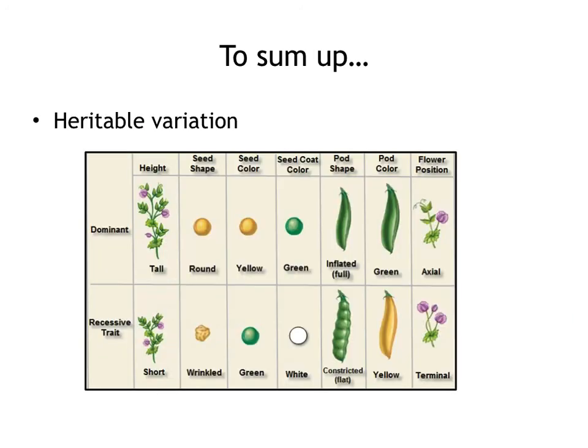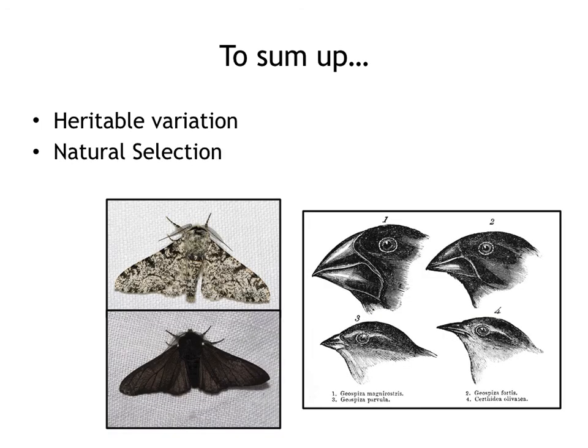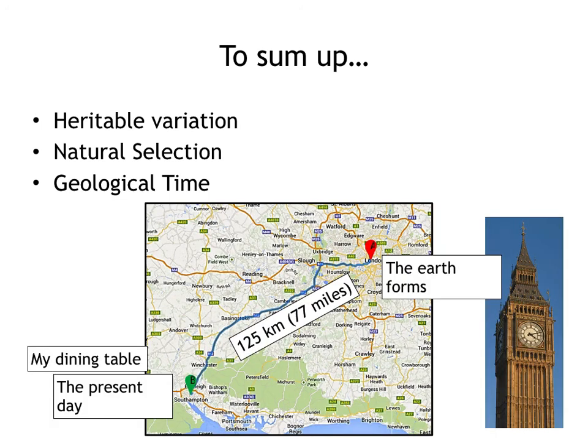To sum up: we have heritable variation as explained by Mendel; we have natural selection as explained by Darwin, where some organisms are better suited to their environments and more likely to reproduce and pass on their genes; and together with the geological time we need, we now have the time for all of these rare events to happen. Thank you.